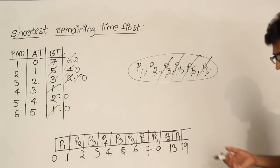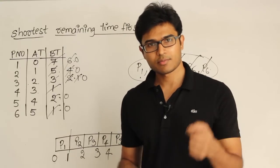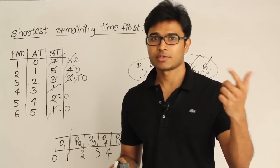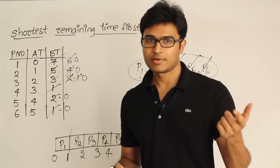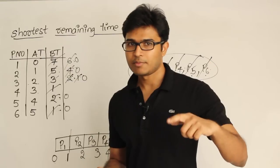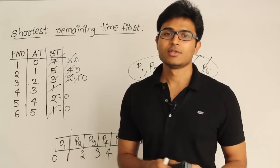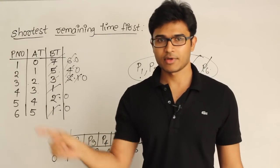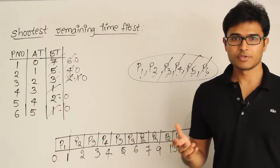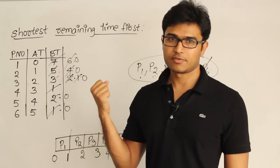So this is how Shortest Remaining Time First works. The concept is: even though you pick the best, shortest job, you execute it for one unit and check if any better process is available — one with a burst time less than the remaining time of the current process. If so, preempt it and continue with the other one. You keep doing this until all processes become available, after which it becomes the non-preemptive version and you simply pick the least remaining time without stopping.